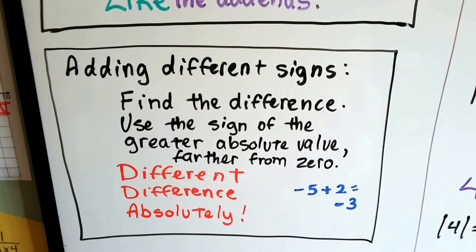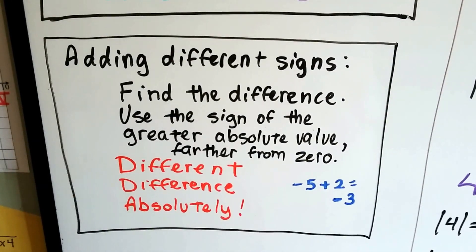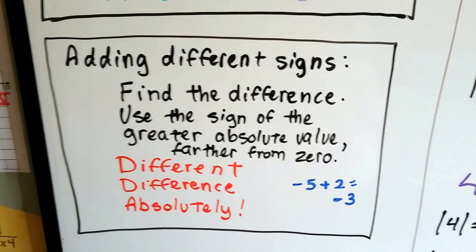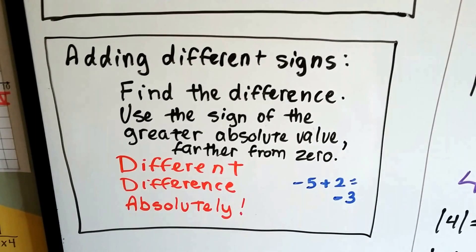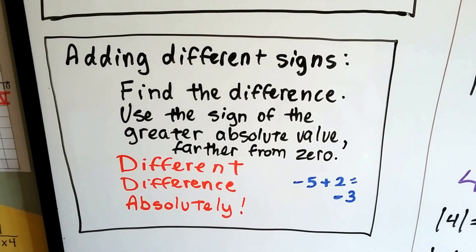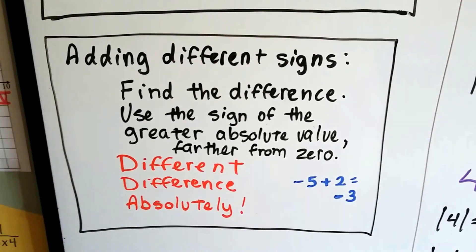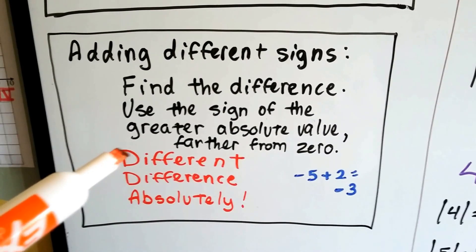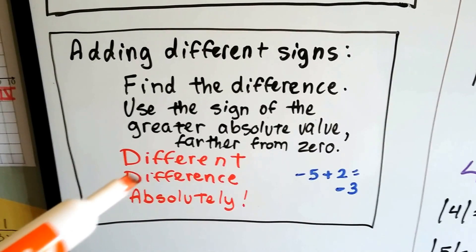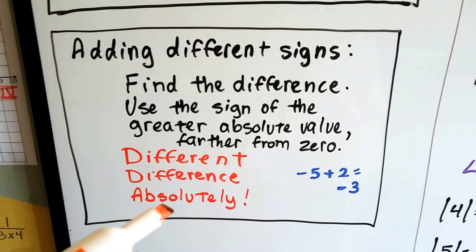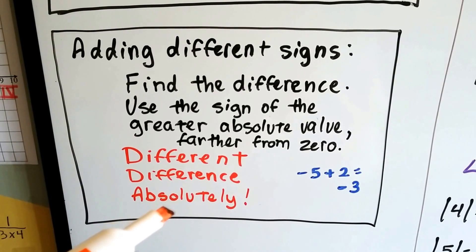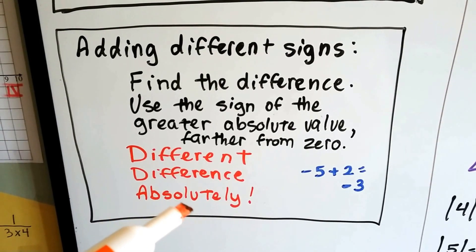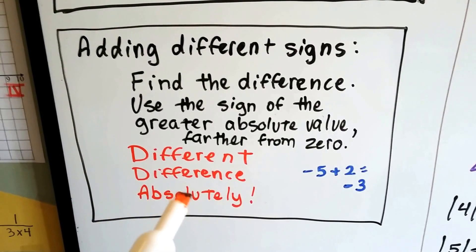When we're adding numbers with different signs, we find the difference between the two rational numbers and use the sign of the greater — the biggest absolute value, the one that's farthest from zero. My little saying for different signs is: different difference absolutely — because you have to remember to use the sign of the greater absolute value. That's why 'absolutely' is important in this saying.